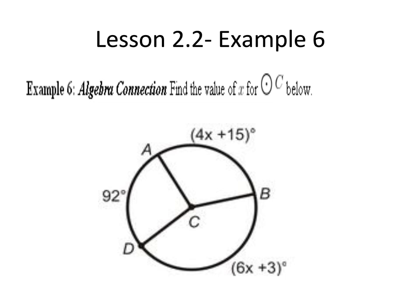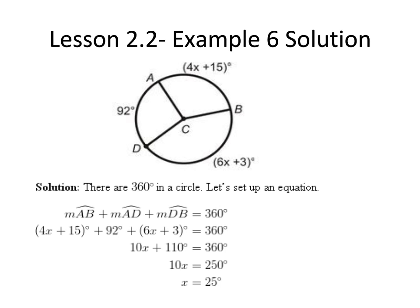Find the value of X for circle C. First we know that there are 360 degrees in a circle, so the sum of all the arcs of this circle will equal 360 degrees.